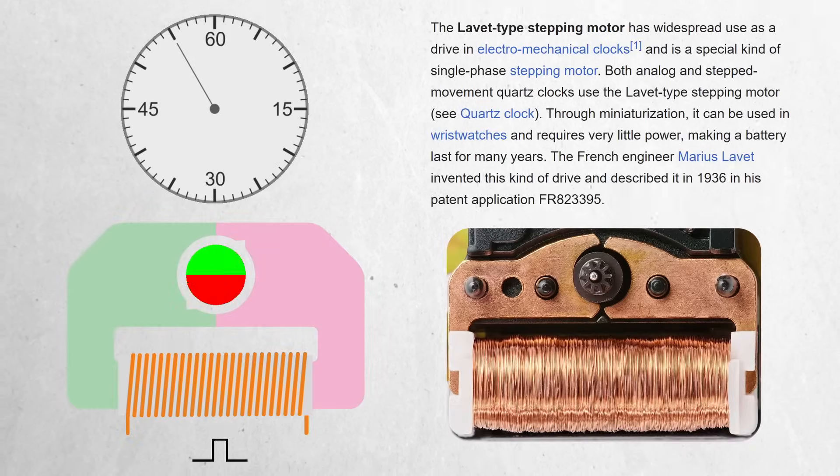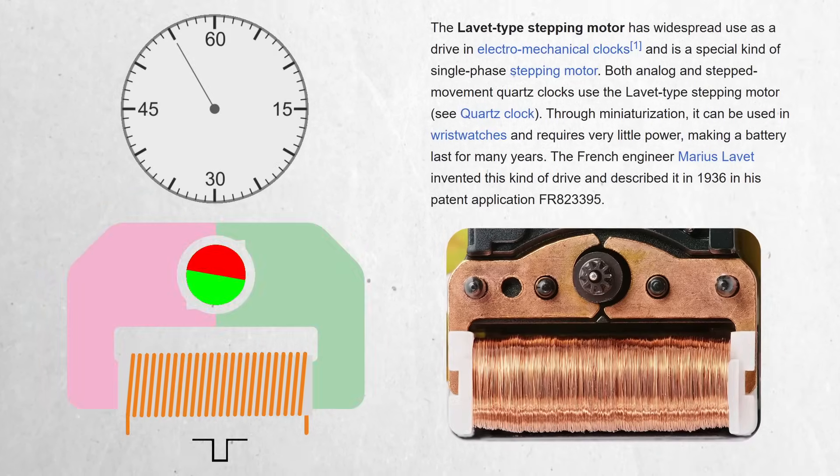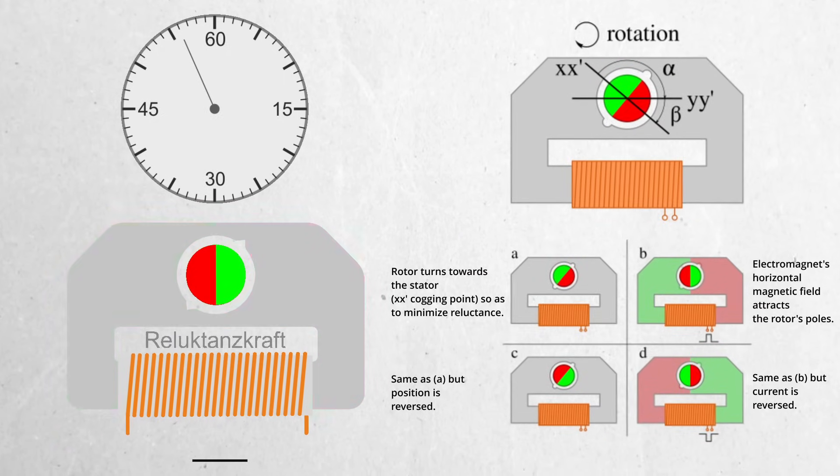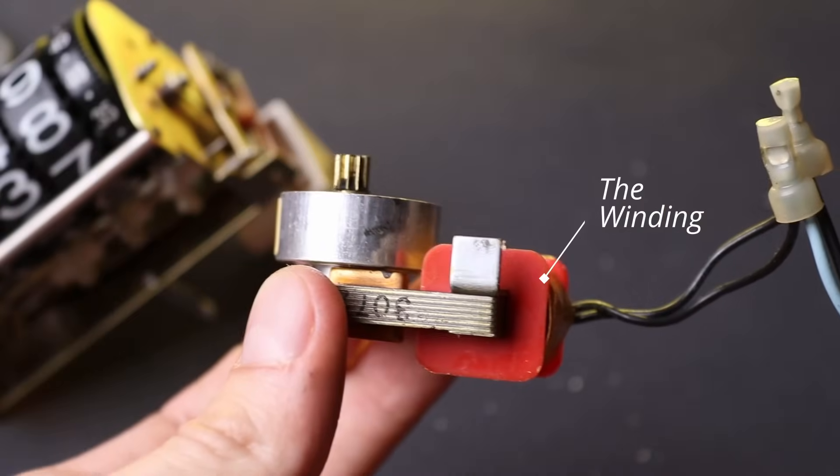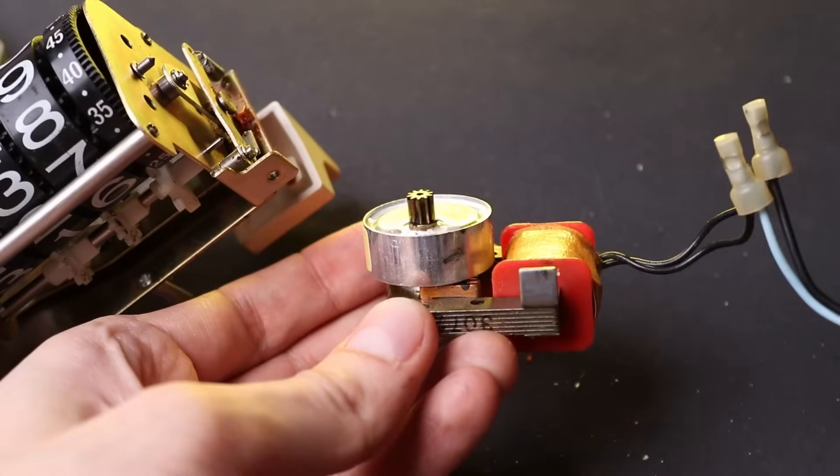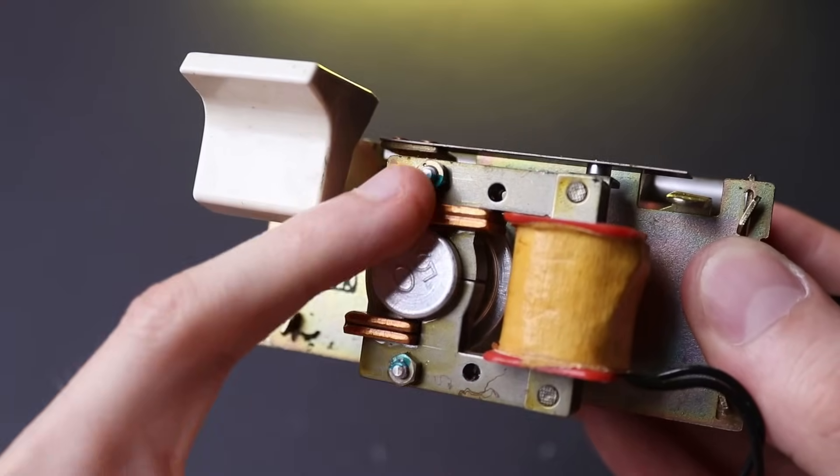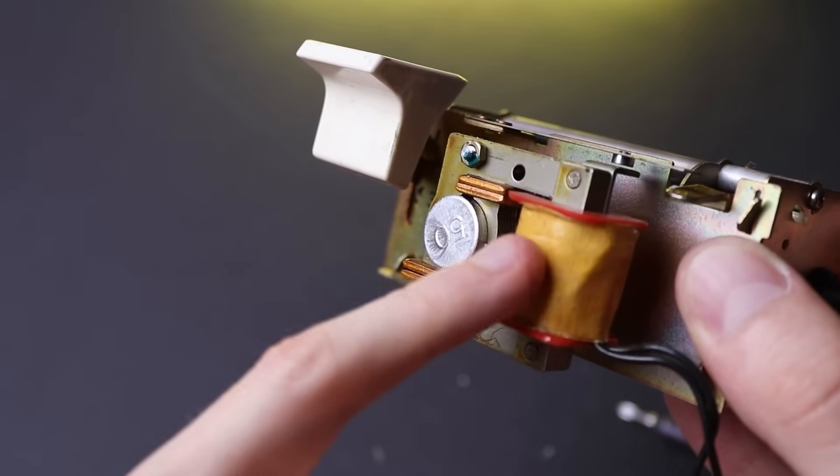Such a motor actually used in a lot of modern clocks and is called Lovett-type stepping motor. The rotor of the motor is a permanent magnet and is able to turn only in one direction when alternating voltage is applied to the winding. This one. So basically, AC voltage applied from the wall plug directly to this coil turns the stator into an electromagnet, the polarity of which changes 50 times per second.